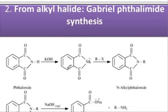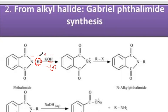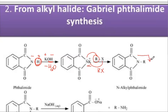In the Gabriel phthalimide reaction, the compound called phthalimide contains a ring with C-O-N-H. Using alcoholic KOH, the hydrogen atom and OH group leave as water, and N⁻K⁺ is formed. This potassium salt reacts with an alkyl halide — potassium and halogen combine to form potassium halide — and the alkyl group attaches to nitrogen. When this compound undergoes hydrolysis,